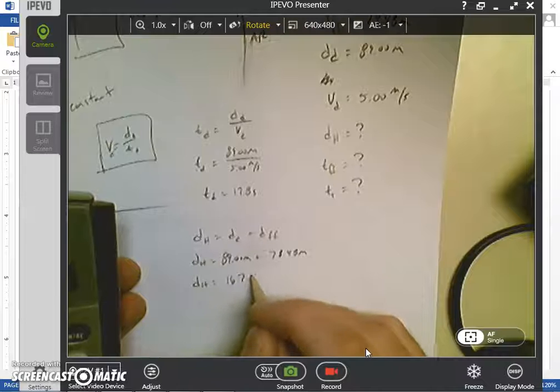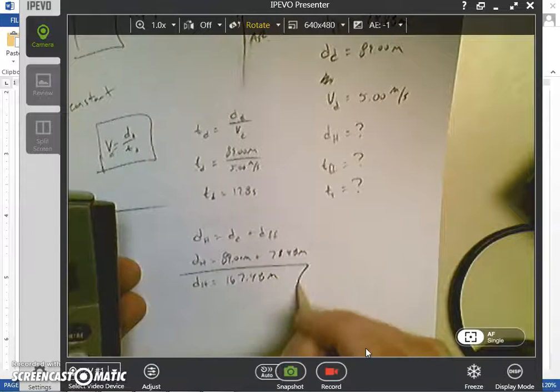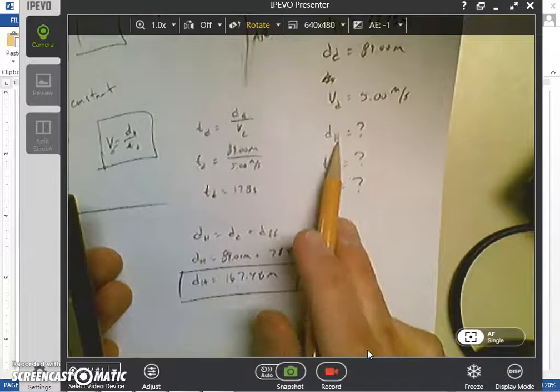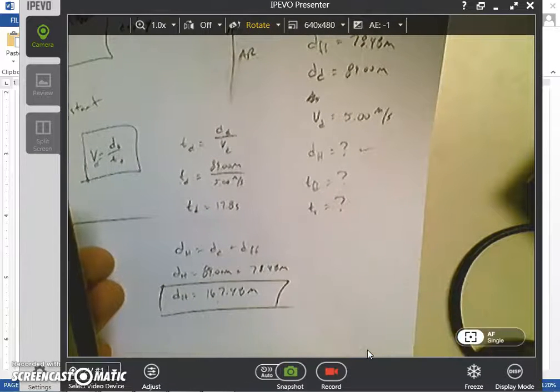So I've got 167.48 meters. So that is one of my answers, so I'm going to box that in. That is my helicopter height.